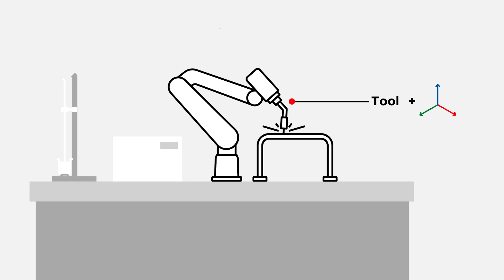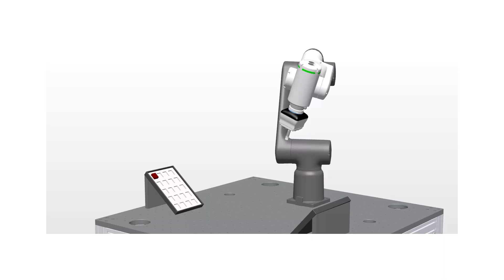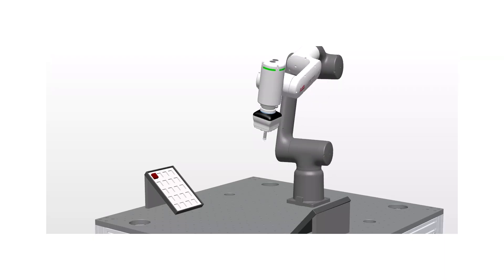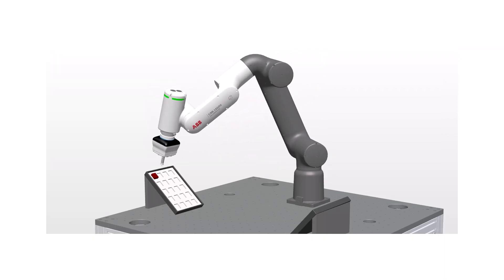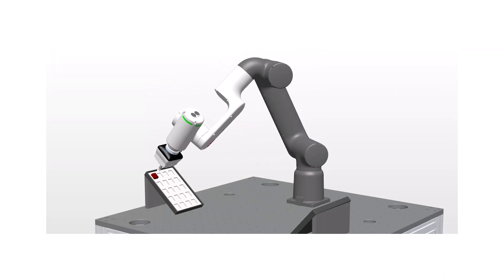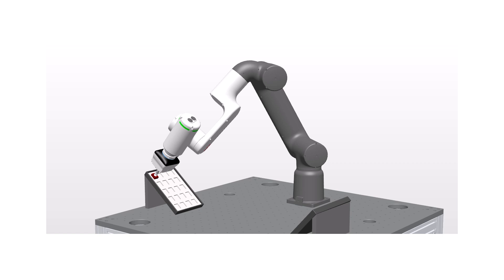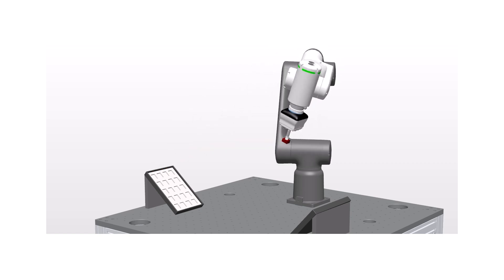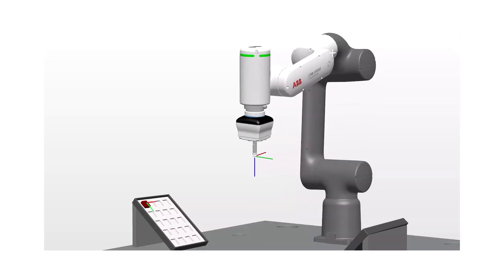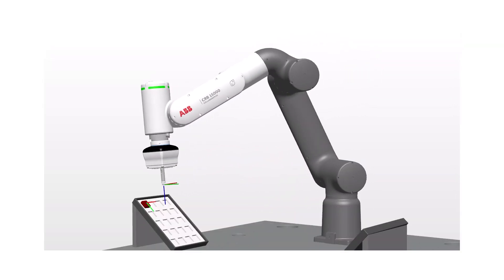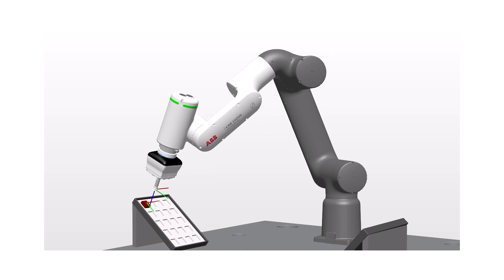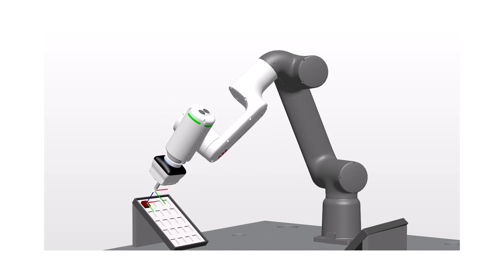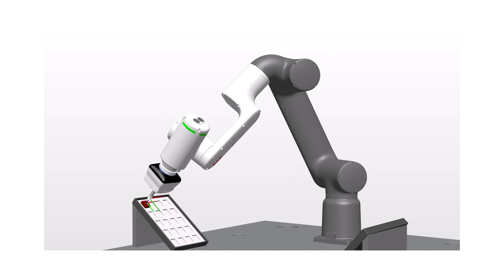Let's have a look at how the robot reaches a position. This is how we see it in reality. But what really happens here? Let's have a look at the coordinate system. Here, the robot moves with its tool coordinate system to the position.